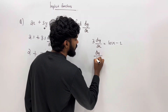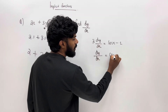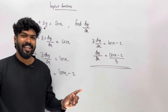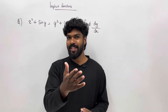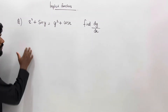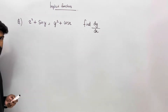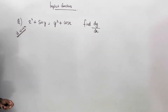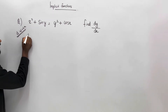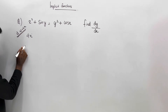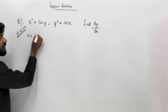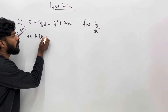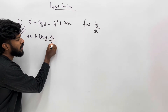We have dy/dx. If we divide by 3, then dy/dx equals (cos x minus 2) over 3. Now the next example: x squared plus sin y equal to y squared plus cos x — find dy/dx. Take the derivative with respect to x. We will get 2x with x squared.